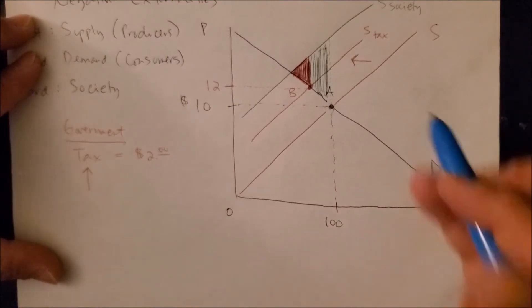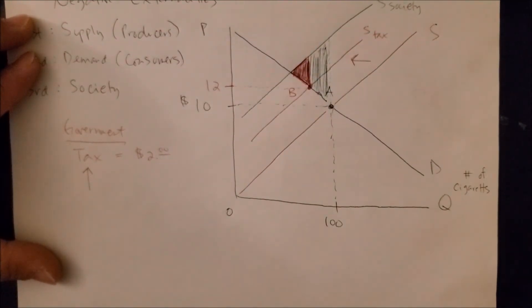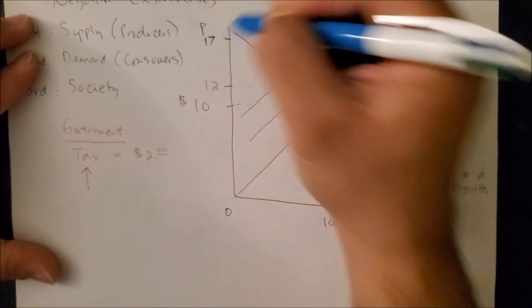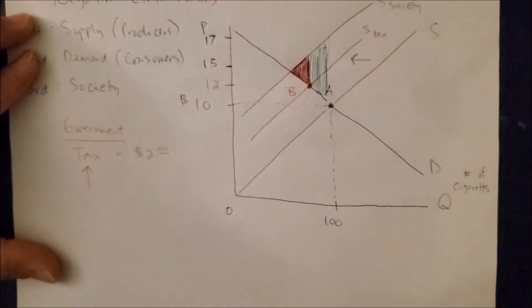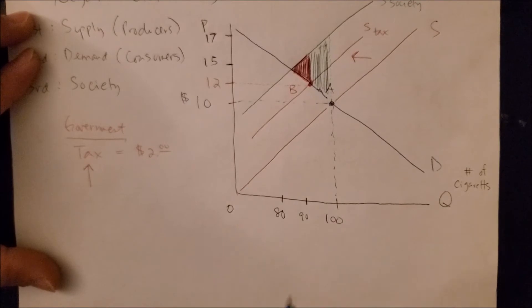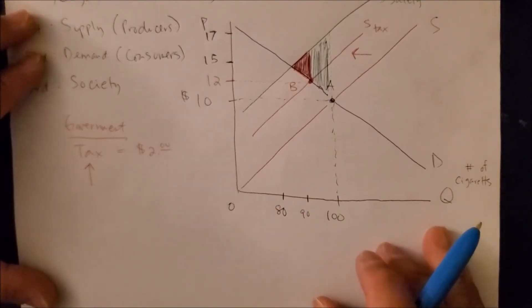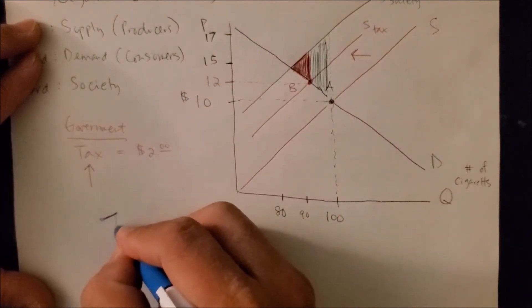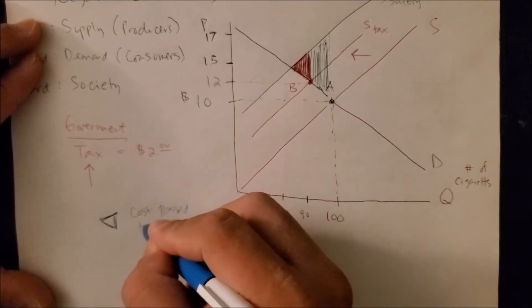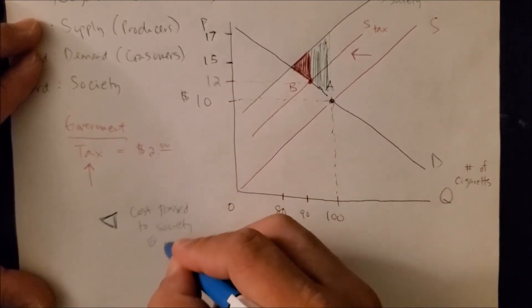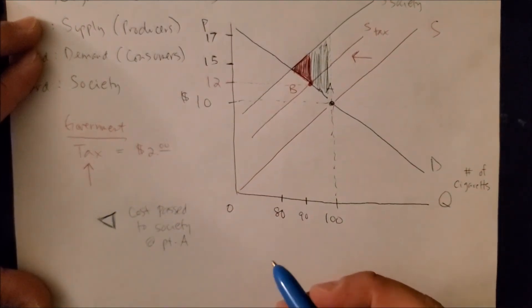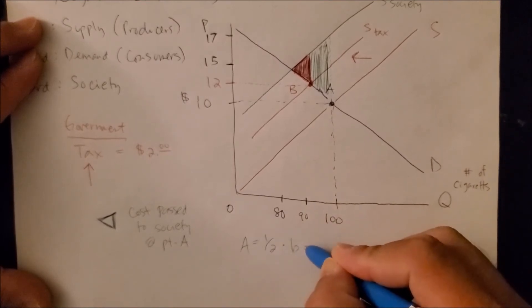Now we can also go one step further and actually measure these triangles. But what we need though is we need some numbers. So let me go ahead and put some numbers here. Let's make this point 17, this point here 15, this point here 90, and that point here 80. So once we have the numbers set, we can now look at the following areas. The first area is the green triangle. And this represents the cost that's passed to society at point A. Now if you remember back in math, we remember the area of a triangle, the green triangle, to be half times base times height.